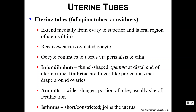The uterine tubes can be divided into a couple of different regions. The infundibulum is the funnel-shaped opening at the distal end. We have finger-like projections called fimbriae that come from the infundibulum and drape over the ovaries, kind of like fingers holding on to the ovaries. Once we move through the infundibulum, we move through the ampulla, which is usually the site of fertilization. We then move to the isthmus, which connects to the uterus.